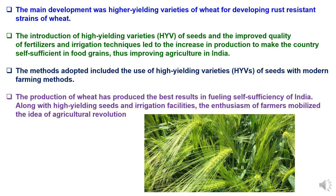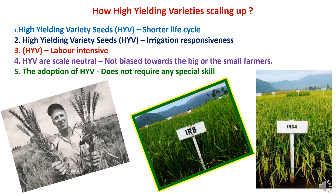The main development in high yielding variety introduction was the development of higher yielding and rust-resistant strains of wheat. The introduction of high yielding varieties of seeds and improved quality of fertilizers and irrigation techniques led to an increase in production, making the country self-sufficient in food grains by improving agriculture in India. The methods adopted include the use of high yielding variety seeds with modern farming methods. During the Green Revolution, wheat production produced the best results in fueling self-sufficiency in India. Along with high yielding seeds and irrigation facilities, the enthusiasm of farmers mobilized the idea of an agriculture revolution.